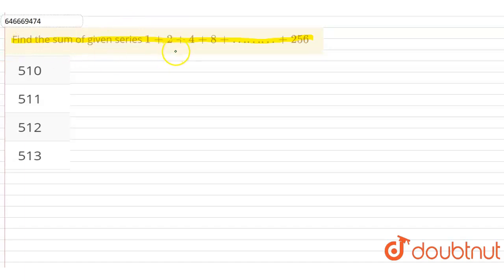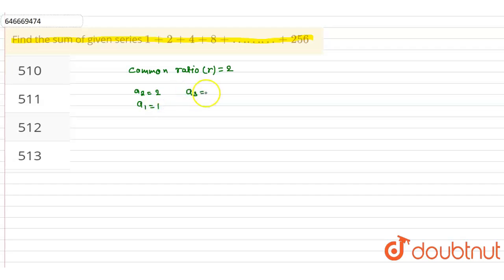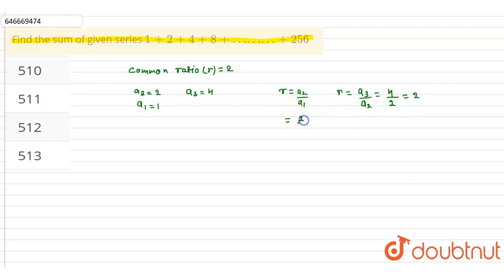If we look at the series, this series is a GP — geometric progression — because this series has a common ratio r equal to 2. For example, a2 divided by a1 gives 2 divided by 1 which is 2, and a3 divided by a2 gives 4 divided by 2 which is also 2. So this series has common ratio 2.